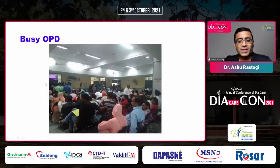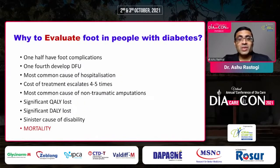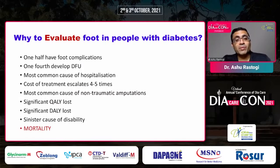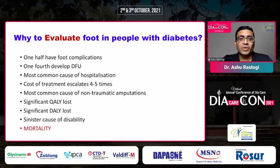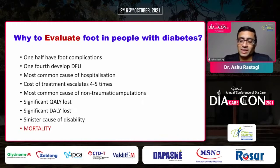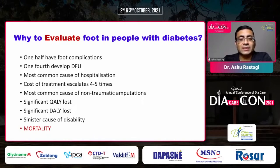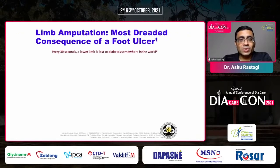This is my OPD at PGI — you can see the huge number of patients sitting there. Evaluation of the foot in people with diabetes is very important for both primary and secondary prevention. One half of all patients with diabetes have foot complications, and one fourth will develop foot ulcers. It is said to be one of the most common causes of hospitalization.